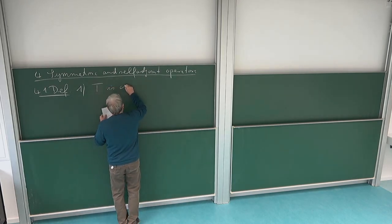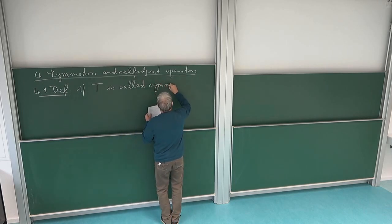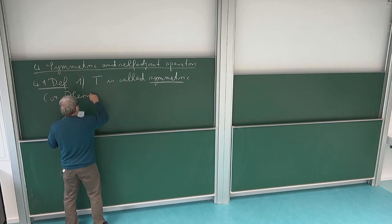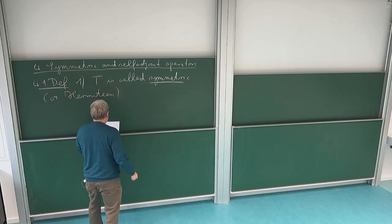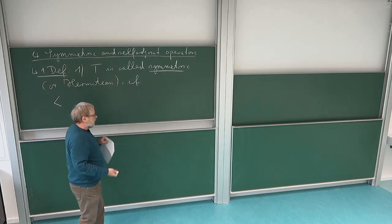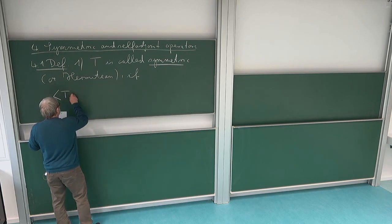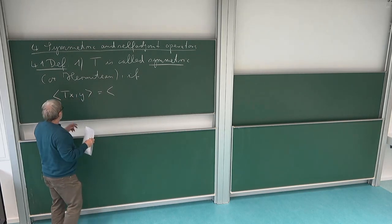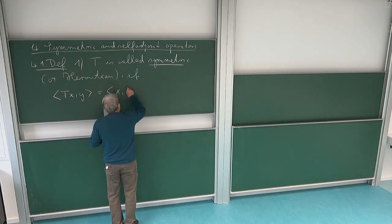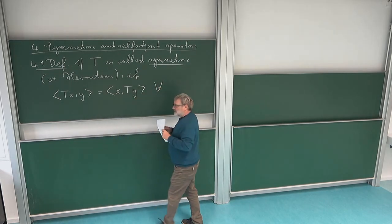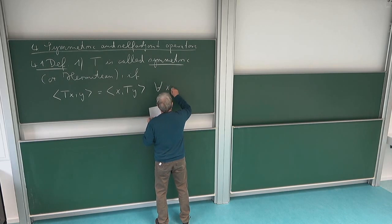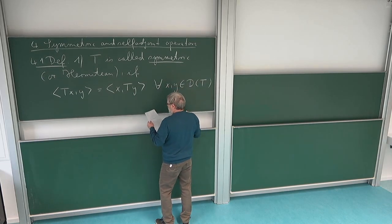So T is called symmetric, or Hermitian sometimes — these are the same. We do not distinguish between symmetric and Hermitian. So if we have this equality, which in the bounded case determines the self-adjointness of an operator, namely that we can write the inner product ⟨Tx, y⟩ equals ⟨x, Ty⟩ — we require this wherever it makes sense. Here we apply T to x, and here we apply T to y, so x and y both should be in the domain of our operator. This should be true for all x and y in the domain.